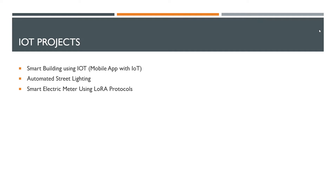Smart meter reading — the main concept here is LoRa protocol. LoRa is a wireless device where data is easy to transfer. You don't need mobile or WiFi. Within 5 km you can transfer data. If you are using a smart electrical meter, you can use it.